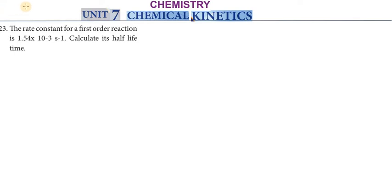Hi students, greetings from Success Education Academy. Chemistry Unit 7, Chemical Kinetics — look back evaluation, order question number 23. The rate constant for a first order reaction is 1.54 × 10⁻³ per second. Calculate the half-life.